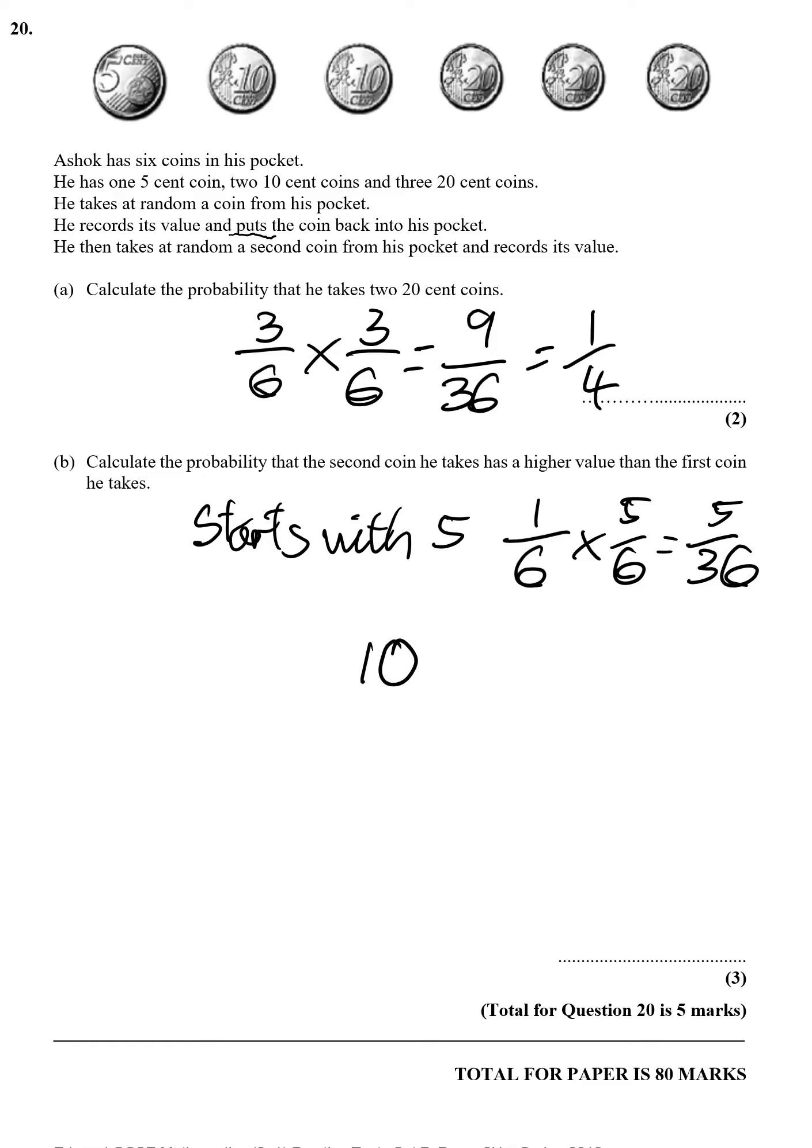If he starts with a 10, that'll be 2 over 6 because there's two of them. And then the probability of getting higher will be 3 over 6. So it's 6 over 36. So it's either that or that. Add them together: 11 over 36. So your final probability is that. Can't actually simplify it either.